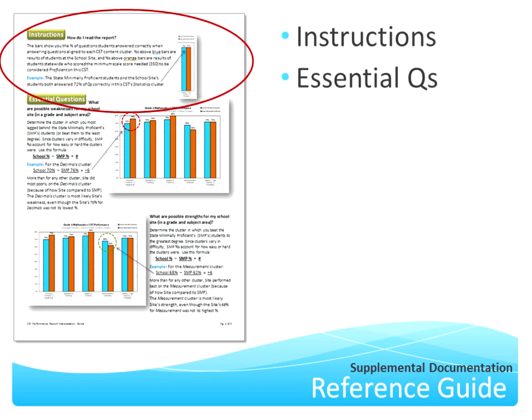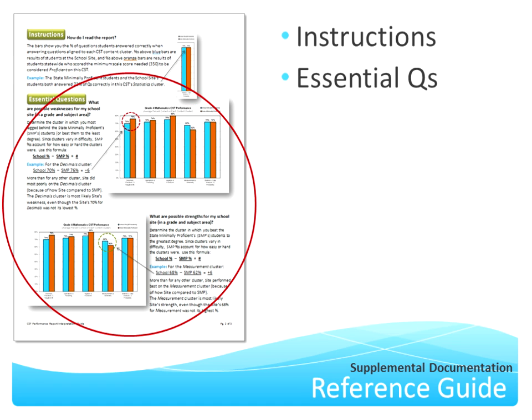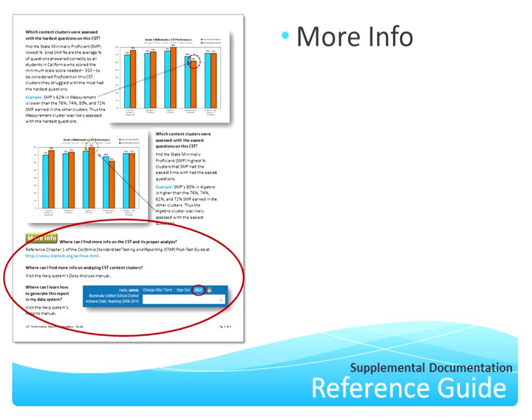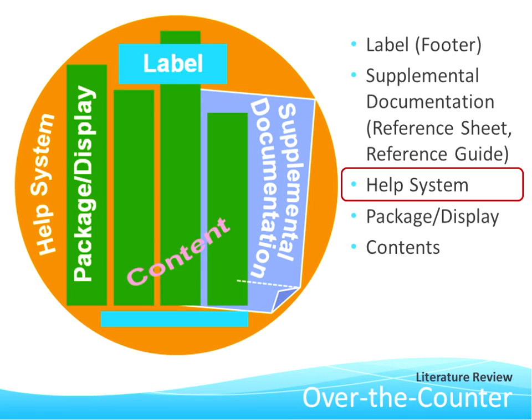The first page of a report's reference guide is identical to the report's reference sheet, though page numbers have been added and it's labeled as a reference guide. After that, you have additional pages to walk educators through the use of a report. At the top of page two, you would have instructions illustrating how to read the report, followed by the essential questions section, where you take each key question and walk the reader through exactly how to use the report to answer that specific question — showing the user where to look, what to look for, with examples. At the end, add a more info section to point the educator toward additional assistance.